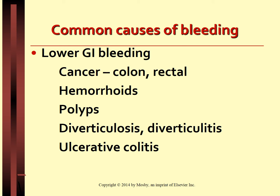In the lower GI tract, cancer of the colon and rectum can erode the submucosal layer and damage vascular layers, causing bleeding. Hemorrhoids and polyps are also frequent causes. Polyps are vascular epithelial proliferations that attach to the epithelial surface by a narrow stalk and bleed when ruptured. Diverticulitis damages the mucosal layers and ulcerative colitis damages the submucosal layer, resulting in erosion and hemorrhage.